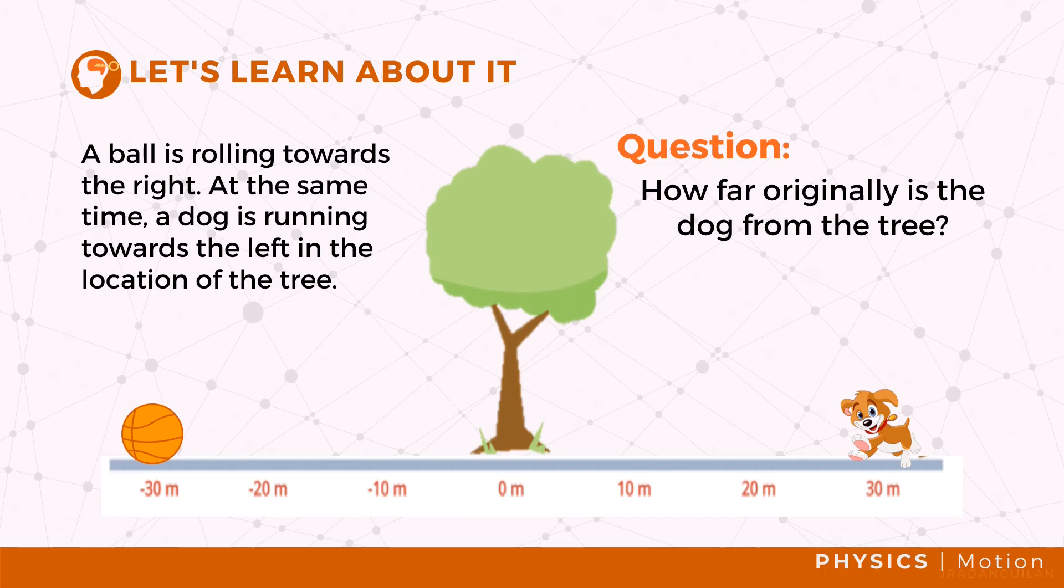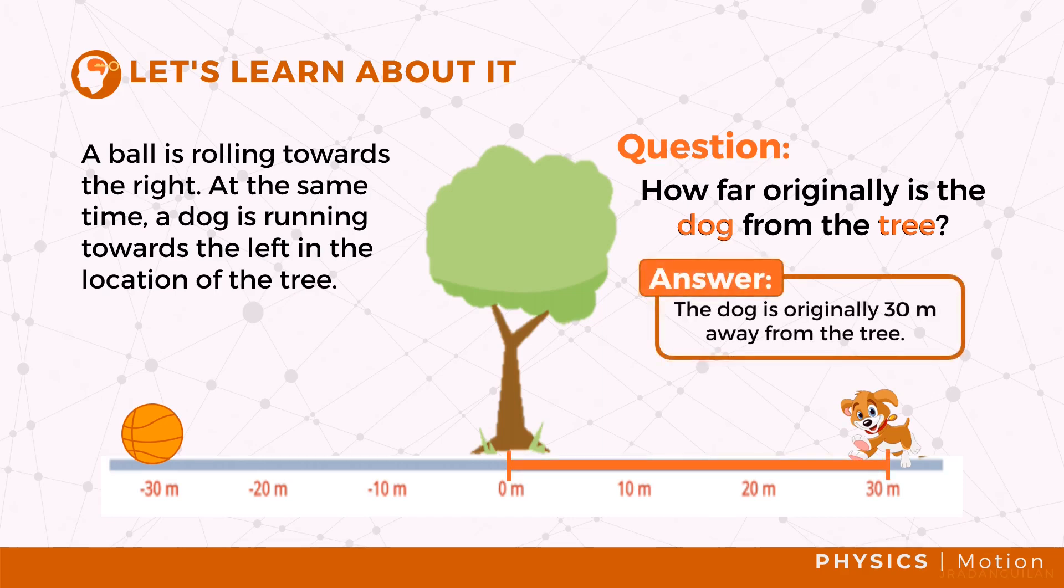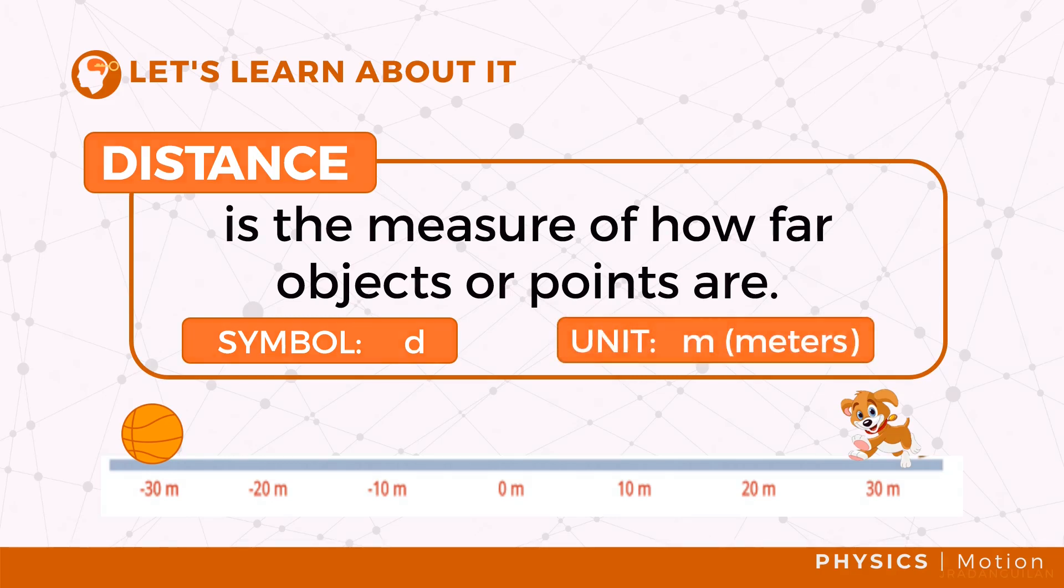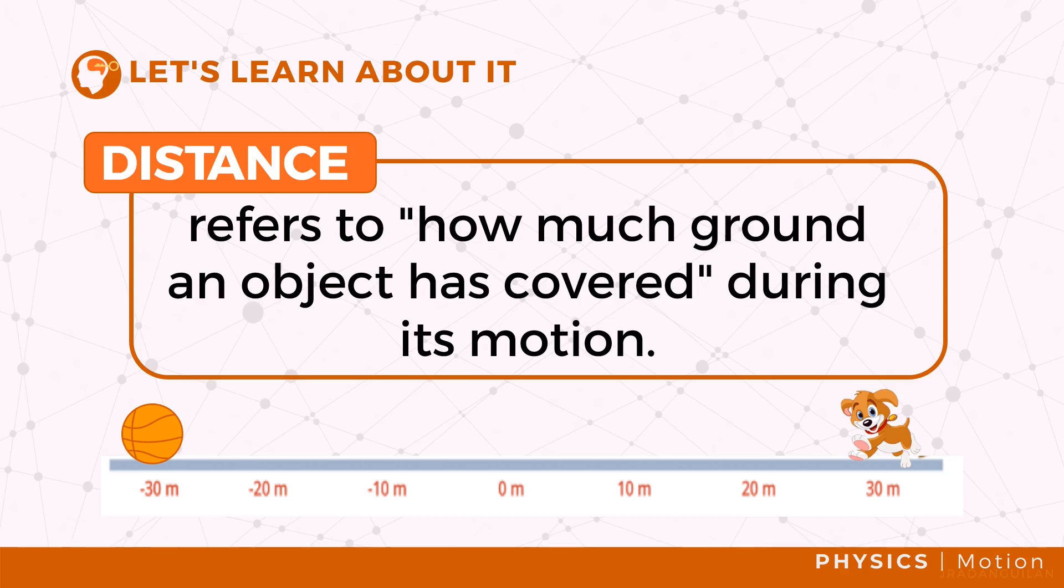To answer this, we must first identify the frame of reference, which is the dog and the tree. So we can say that the dog is 30 meters away from the tree. The measure of how far objects or points are is called the distance. We use the symbol lowercase d.